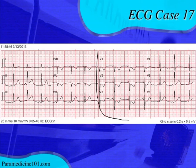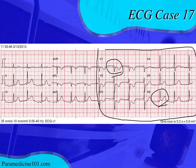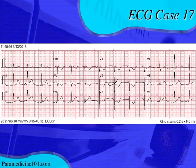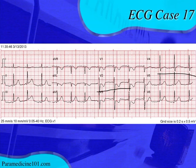Looking at the precordial axis, while it is normal — it does go from a mostly negative QRS complex in V1 to a mostly positive QRS complex in V6 — it is not normal to see these very prominent R-waves in V2. This is sort of an early R-wave progression, though the transition does occur between V2 and V4, so we don't want to say it's early R-wave progression, but we want to pay attention to these R-waves in V2 because they could mean something.